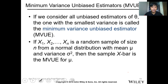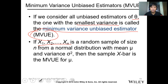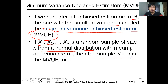For minimum variance unbiased estimation (MVUE): if we consider all unbiased estimators of theta, the one with the smallest variance is called the minimum variance unbiased estimator, or MVUE. If x1, x2, ..., xn is a random sample from a normal distribution with mean mu and variance sigma-squared, then the sample mean x-bar is the MVUE of mu.